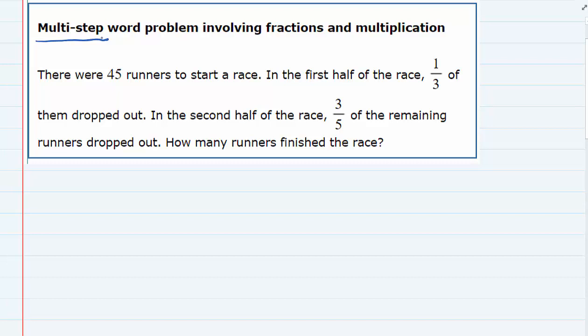Looking at this one, we're told that there were 45 runners to start a race. In the first half of the race, a third of them dropped out. In the second half of the race, three-fifths of the remaining runners dropped out. And we're asked how many runners finished the race.